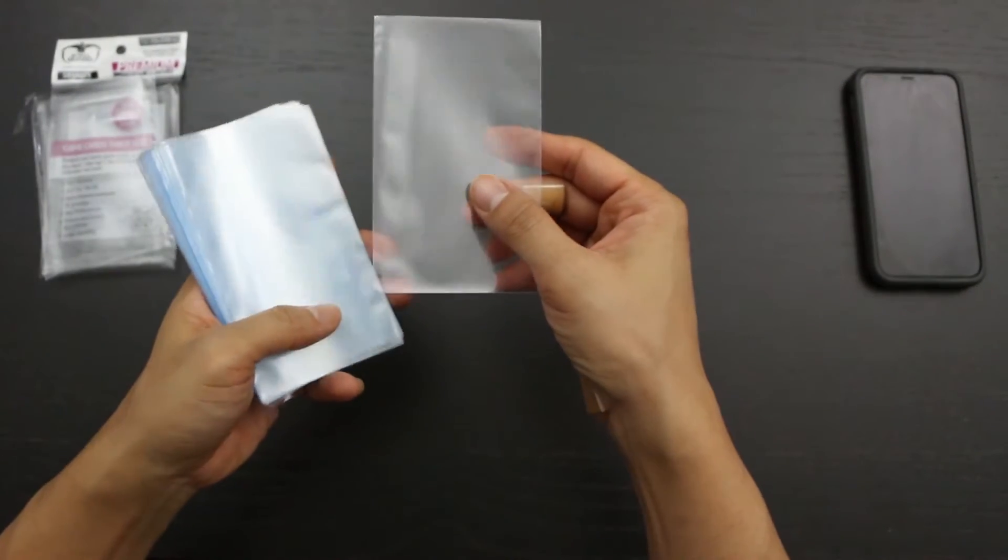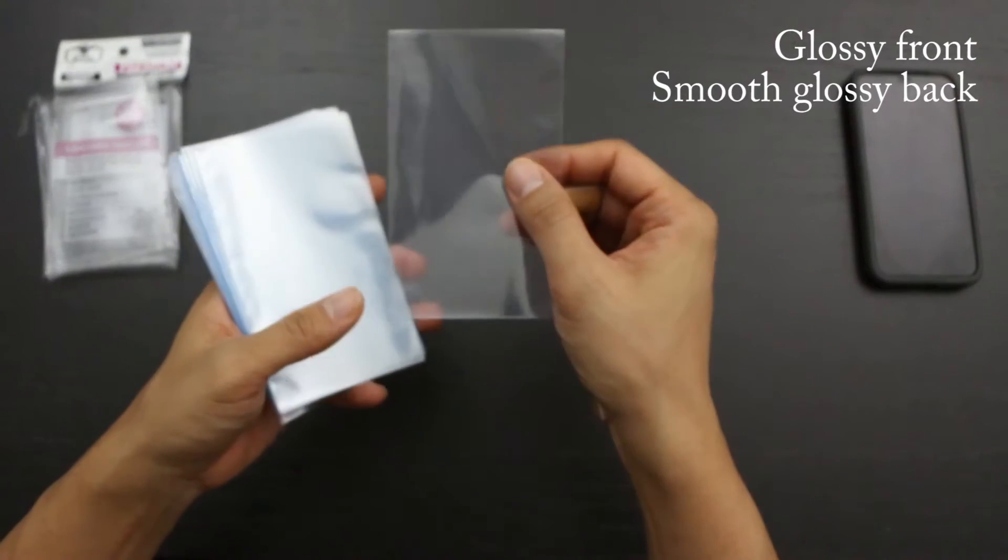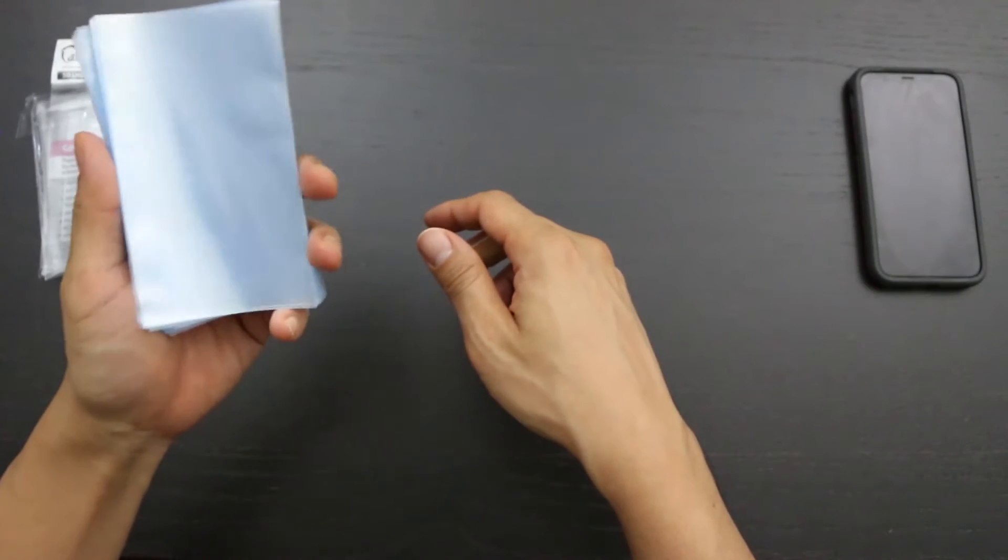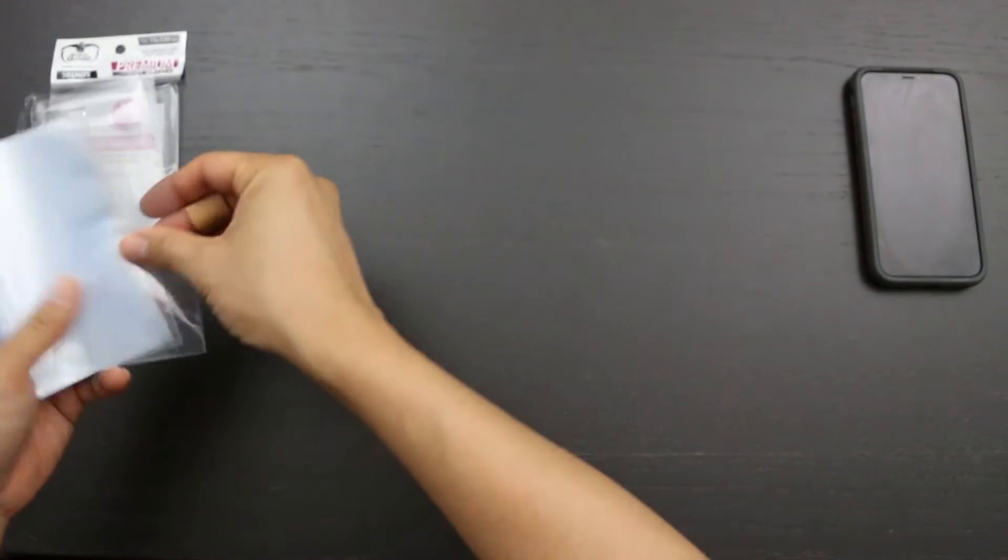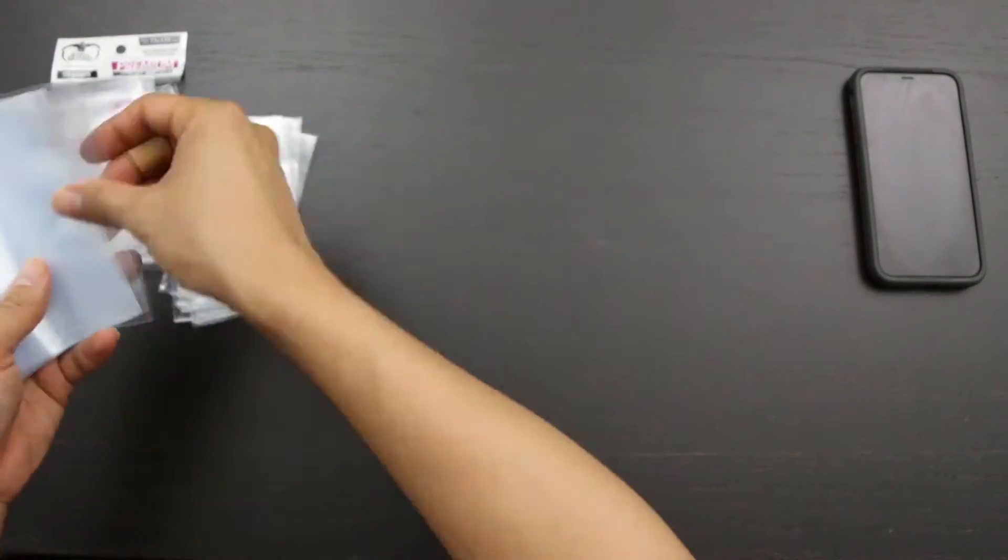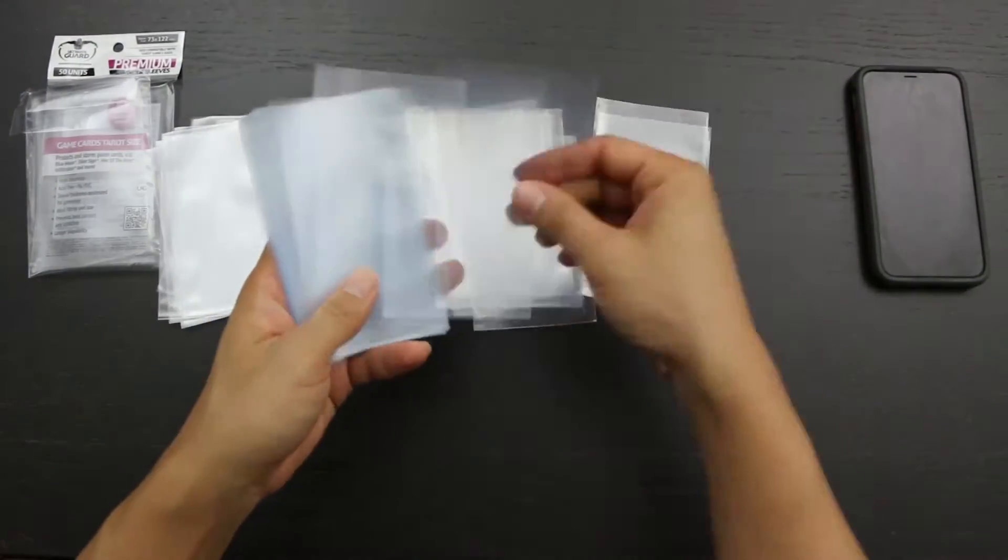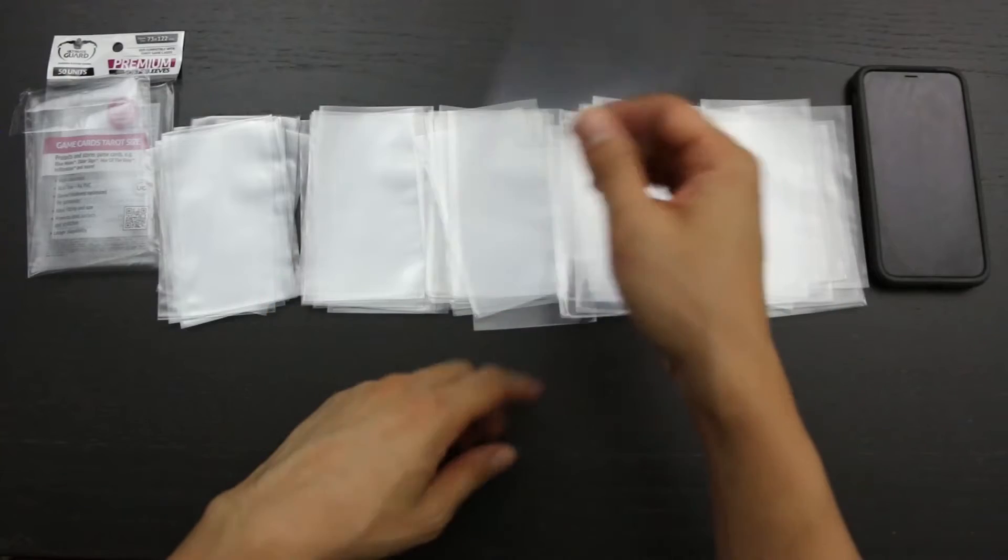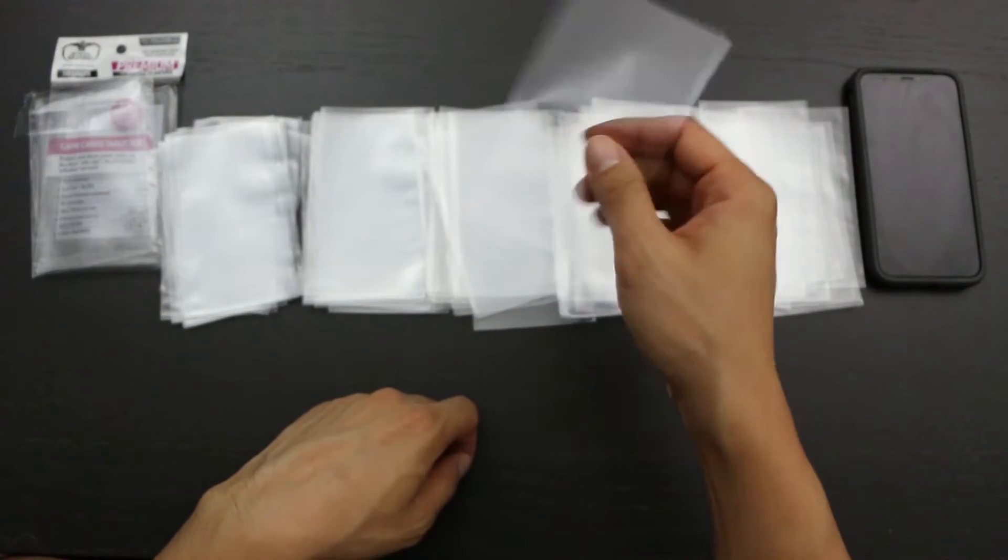As you can see, these sleeves are smooth and glossy on both sides. Now we're going to count to see if there are 50 sleeves here. All right, there are 51 sleeves here, so you are getting what you pay for, and then some.